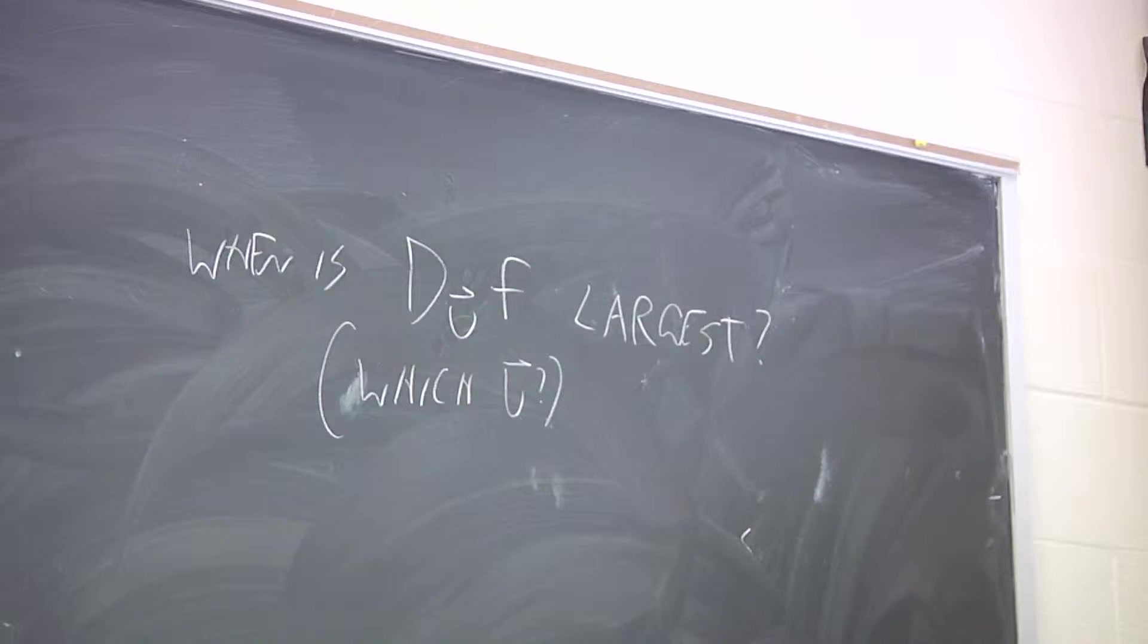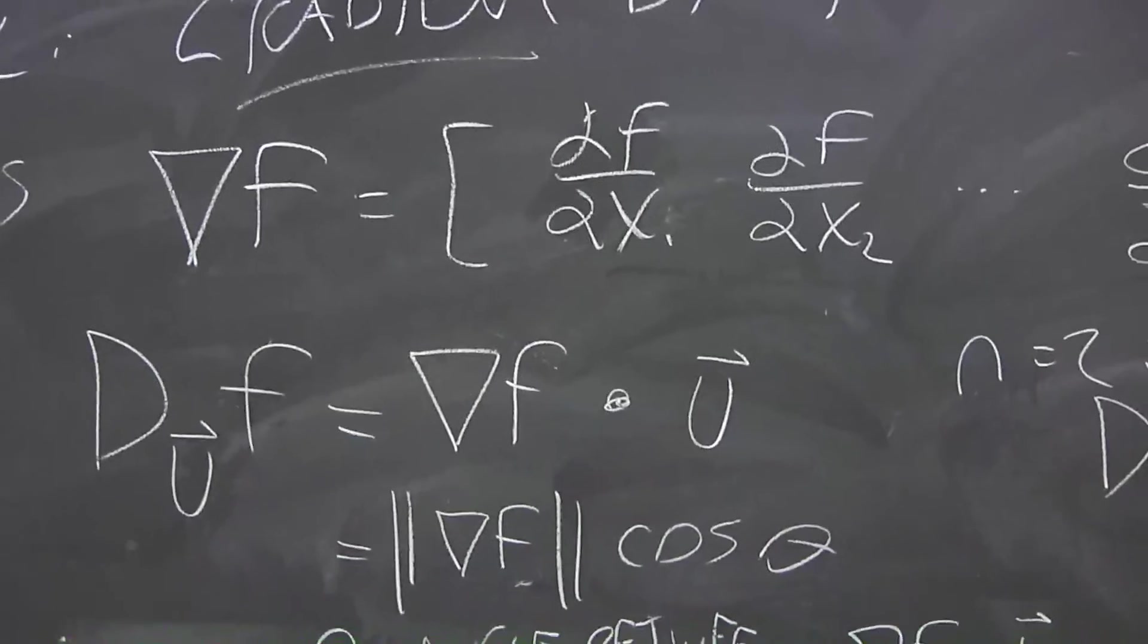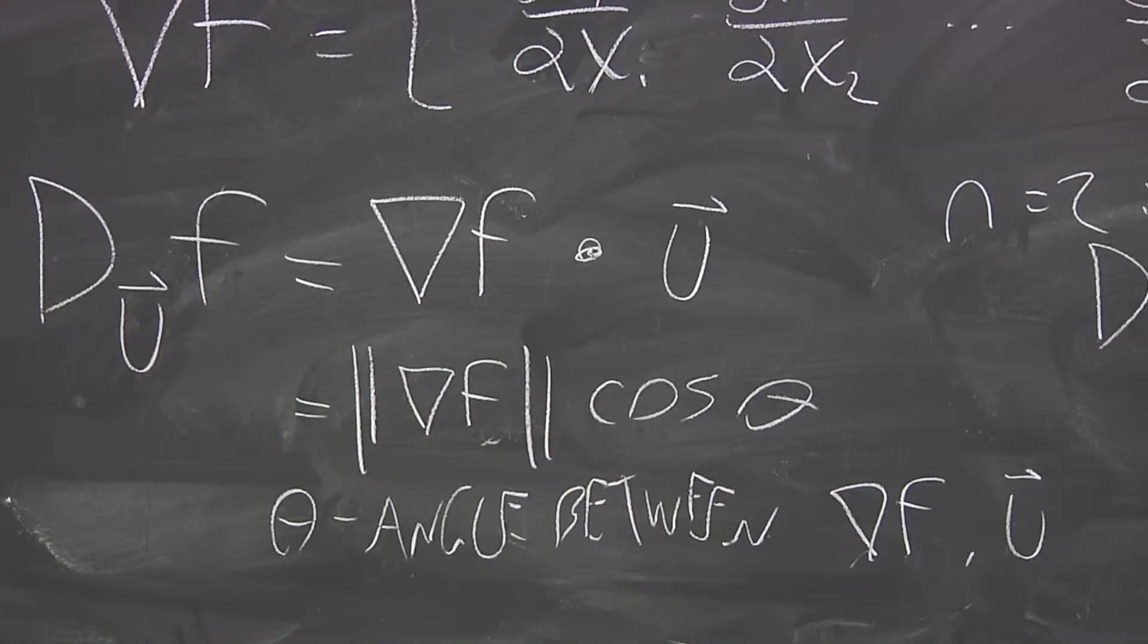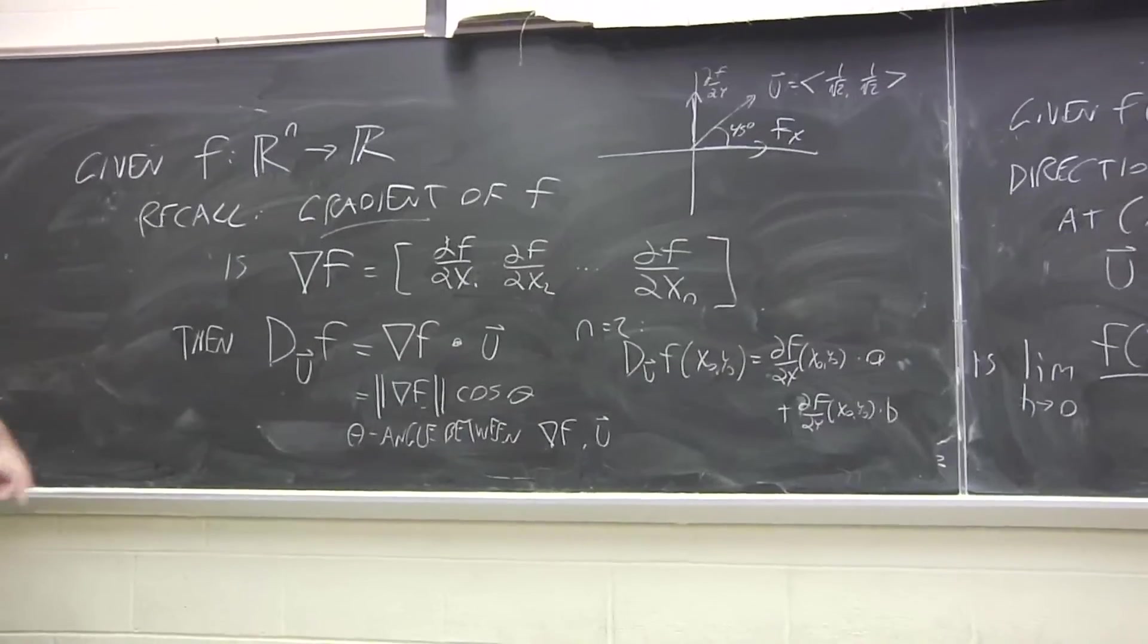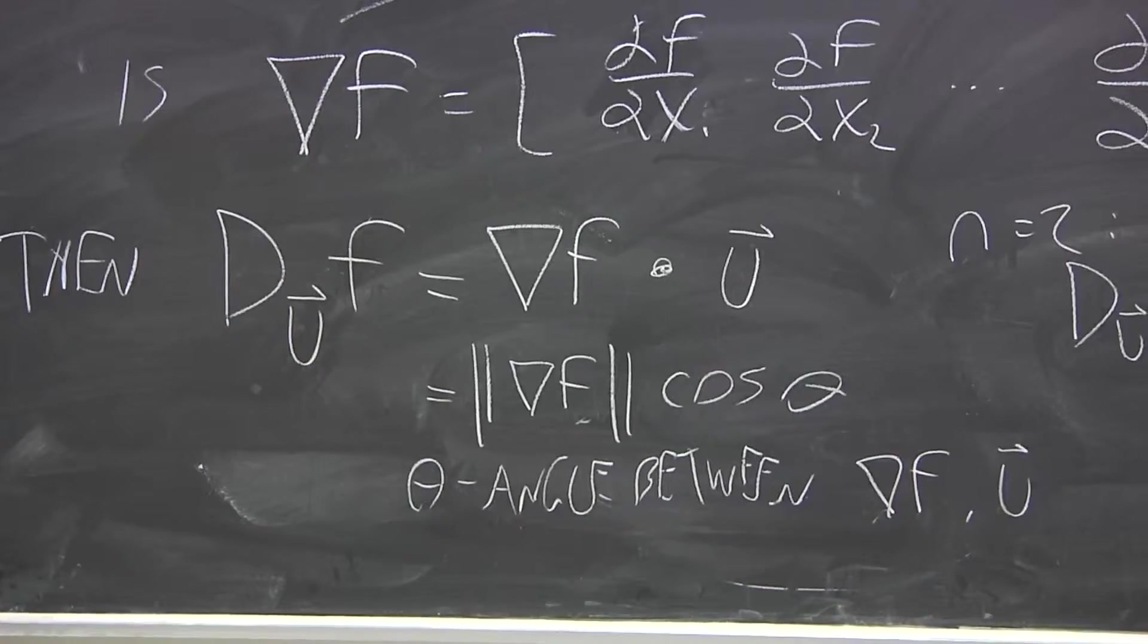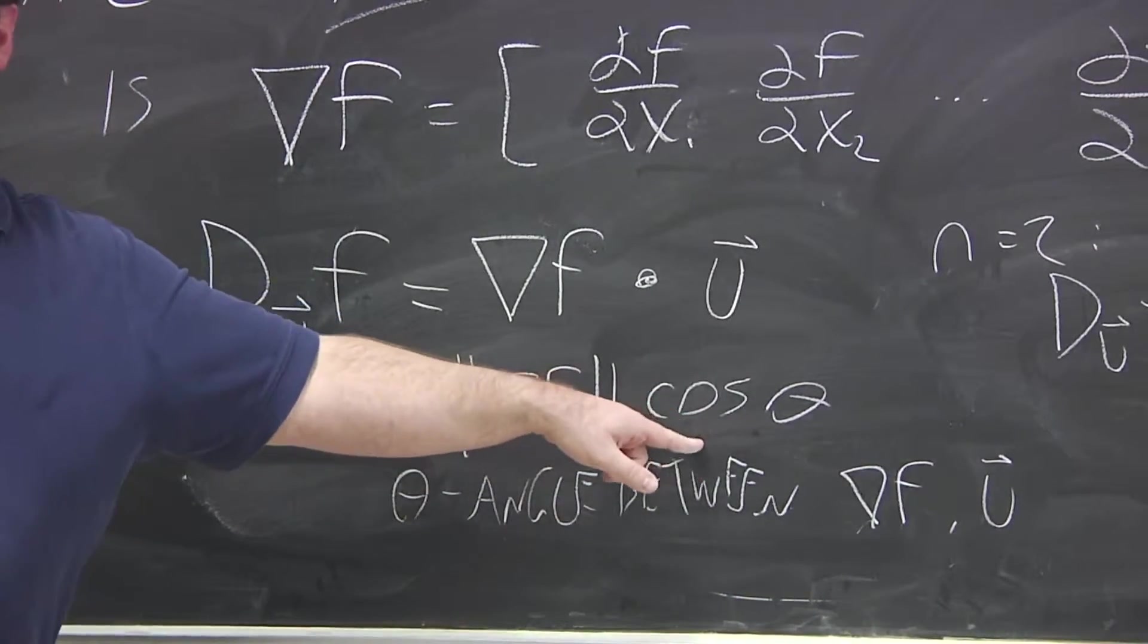What? I think you might have your trig functions mixed up. What? If we keep this in mind. Wouldn't it be when the angle between the gradient of f and u is zero? Yes. So, when theta is zero, then cosine is one.